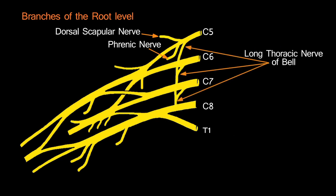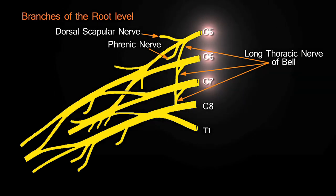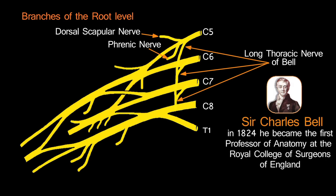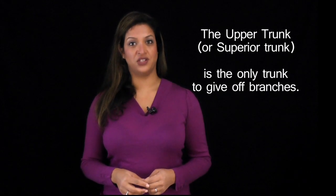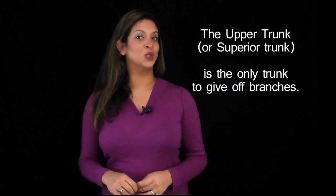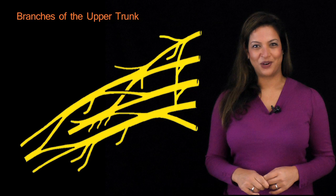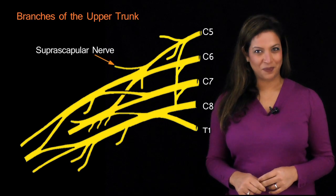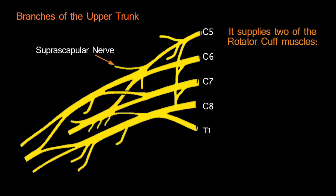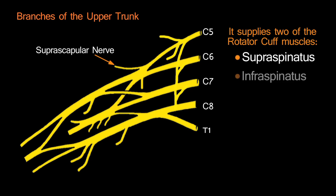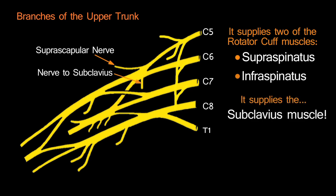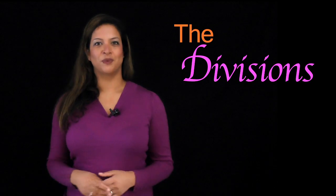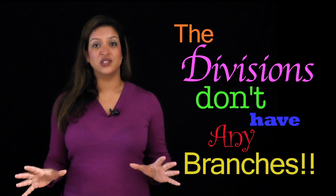The third root-level branch is the long thoracic nerve of Bell, which is C5, C6, C7, named after Charles Bell, the first professor of anatomy at the Royal College of Surgeons of England. Moving on to the trunks, the upper trunk is the only trunk that gives off branches. These are the suprascapular nerve, which supplies supraspinatus and infraspinatus, and the nerve to subclavius. The divisions of the brachial plexus have no branches at all.